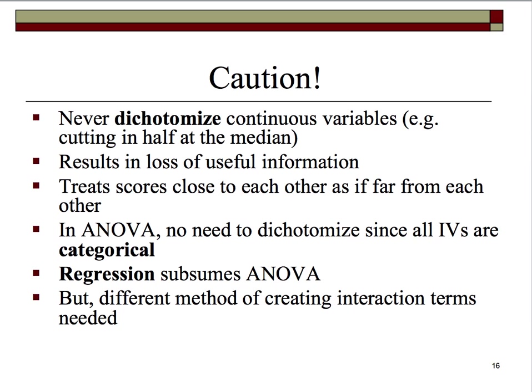In ANOVA, the independent variables are always categorical. Now, multiple regression completely subsumes ANOVA. Multiple regression completely subsumes t-tests, all forms of correlation, ANOVA, ANCOVA, and a variety of other tests.